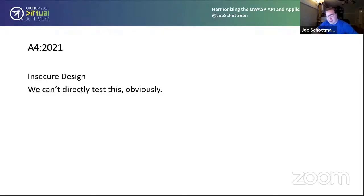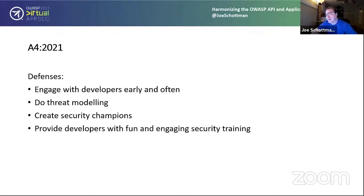New for the 2021 top 10: insecure design. This is about pushing security left and making sure security is considered from the get-go. There's no formal way to test this, but here's what we can do: engage with developers early and often — this works best on an in-house security team. Do threat modeling with developers so they understand the risks from the beginning. Create security champions by giving training to developers to get them really engaged with security so they advocate for it from day one. Provide fun and engaging security training — not dull click-through CBTs, but programs where developers actually hack vulnerabilities and then fix them, which is much more engaging and helps them understand both the risks and remediation.